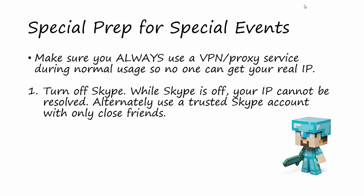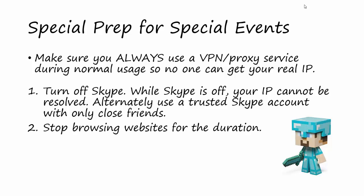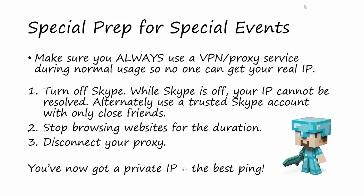Assuming you've used a VPN or proxy service, turn off Skype. While Skype is off, your IP address cannot be resolved, even from people within your contacts. Alternatively, you can use a trusted Skype account with only close friends you know won't be committing attacks or sharing your IP. It's also a good idea to stop browsing websites for the duration of this event, just to make sure you're not having your IP address taken from a hostile website. Lastly, disconnect your proxy. Now you're going to be using your real IP address and no one can find it because Skype is off. You now have a private IP address unknown to the world and the best ping possible — your internet connection is as fast as it can possibly be.